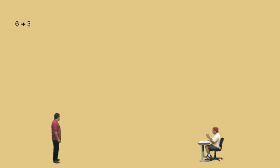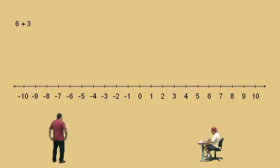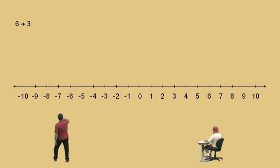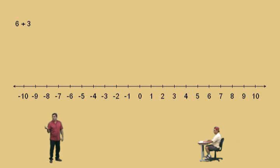Now, Charlie, when you add on a number line, which way do you go — to the right or to the left? To the right. That's right, we move to the right with addition. Now, in this lecture we're only going to be adding positive numbers. Later in the semester we will get to adding negative numbers and also subtracting negative numbers.